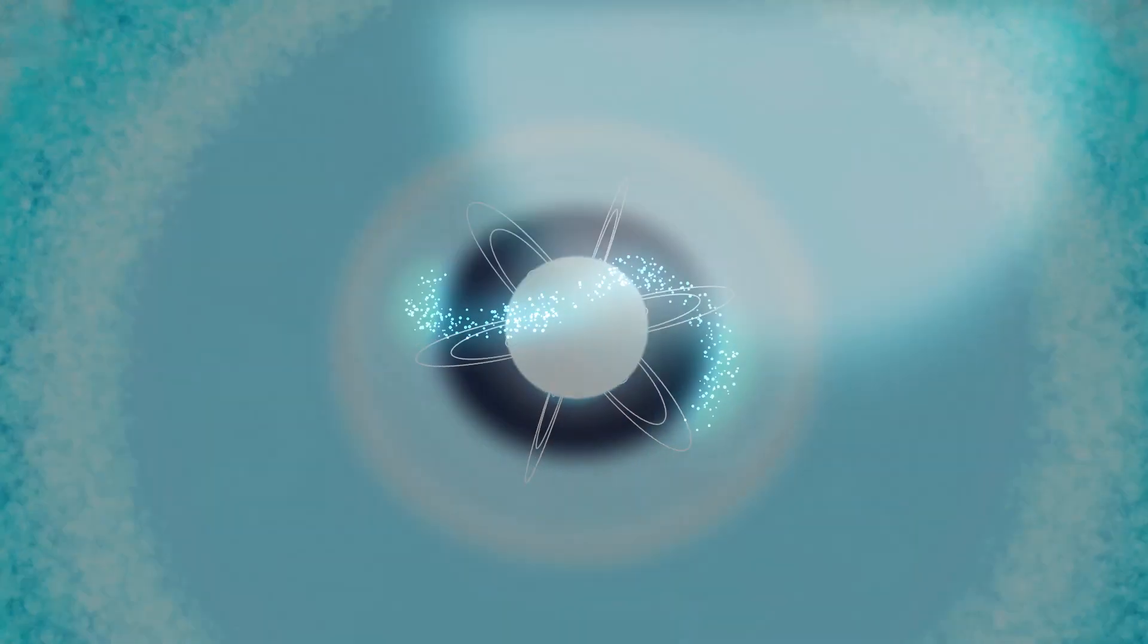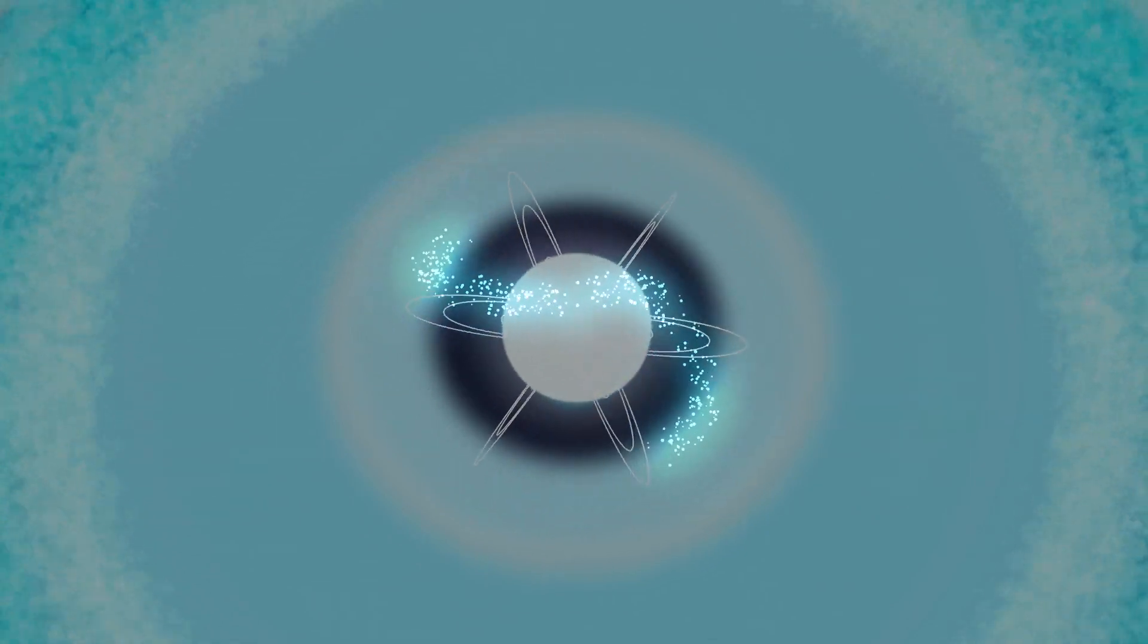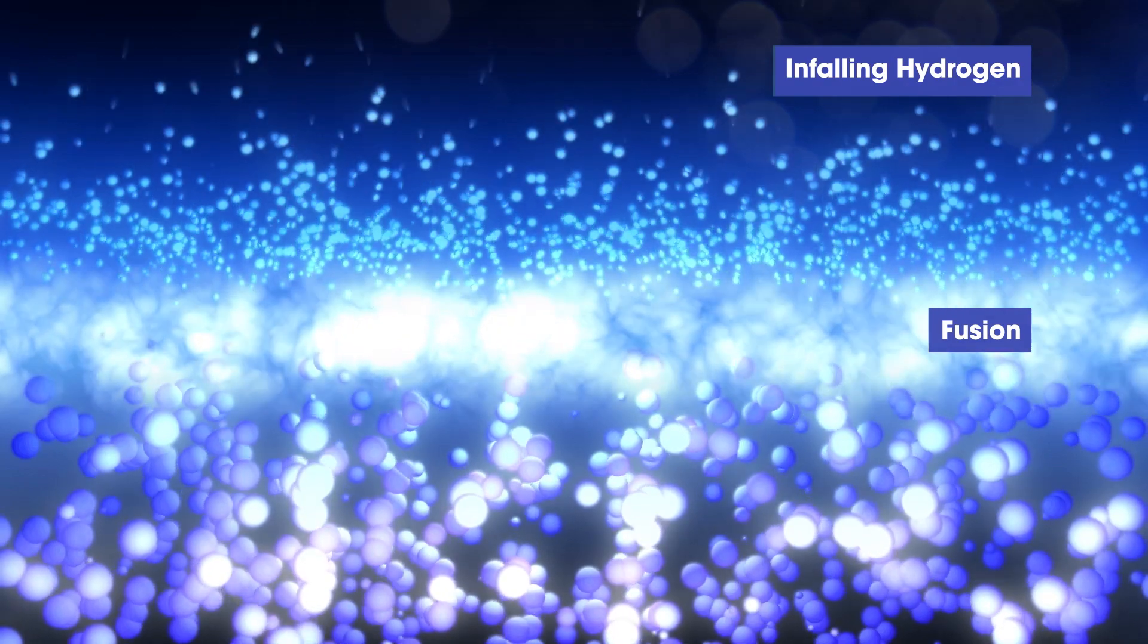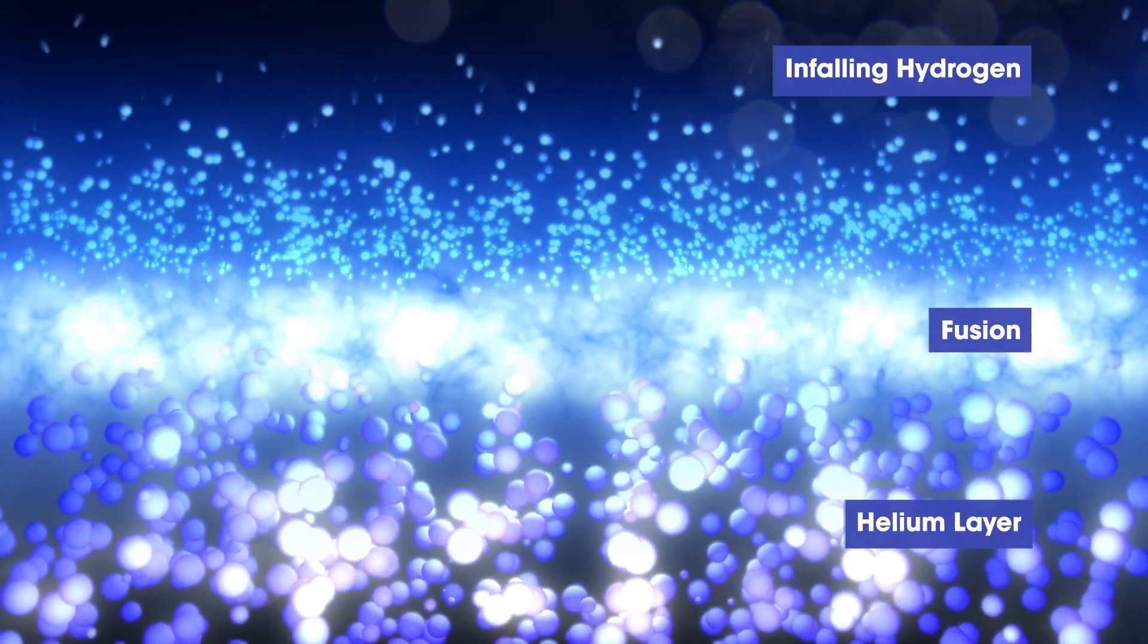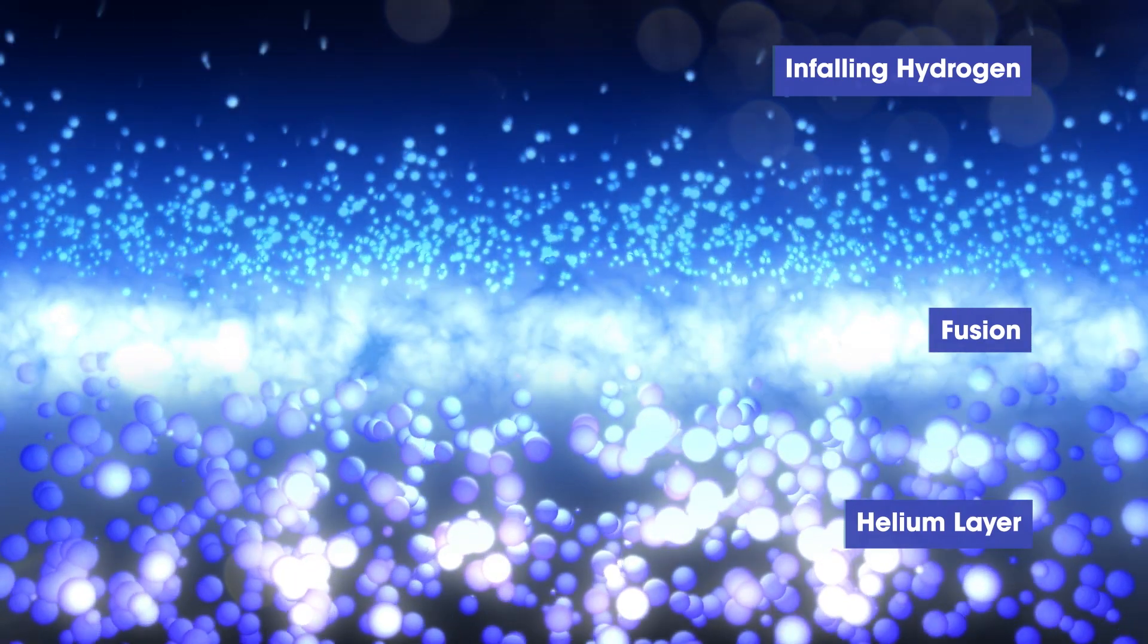The pulsar's super-strong magnetic field sweeps up the gas and channels it to the object's surface. Hydrogen nuclei falling to the pulsar's surface fuse together, producing energy and forming helium nuclei, which settle out below. This process is similar to what happens inside our Sun.